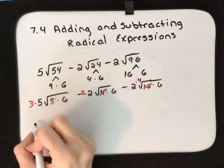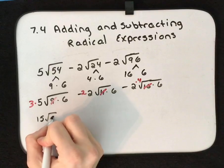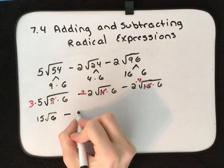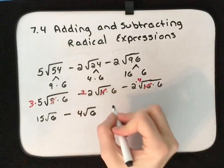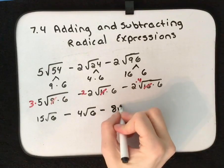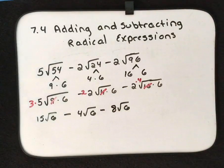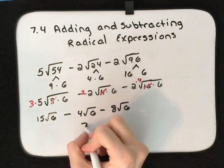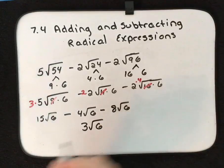3 × 5 gives us 15√6, minus 2 × 2 is 4√6, minus 4 × 2 is 8√6. And now we can simplify it down: 15 - 4 - 8, that gives us 3√6.